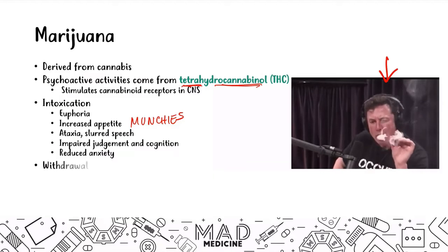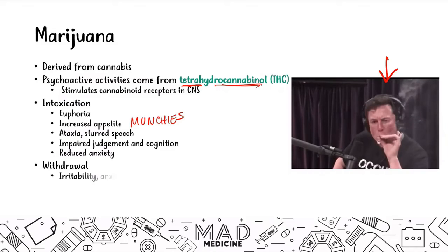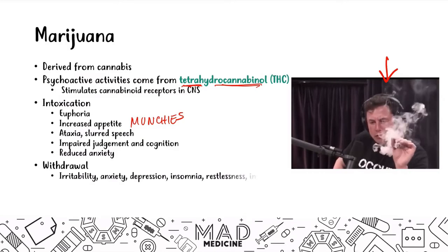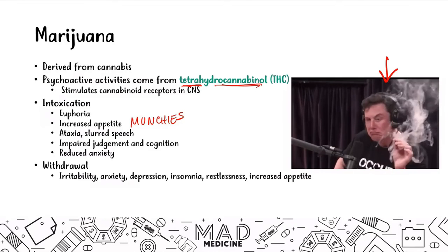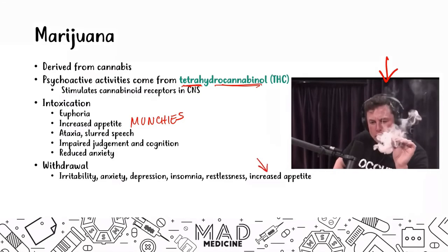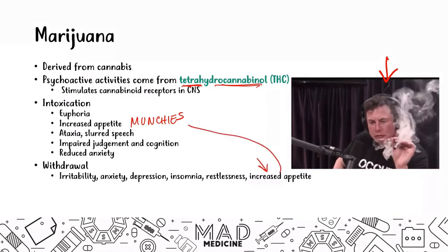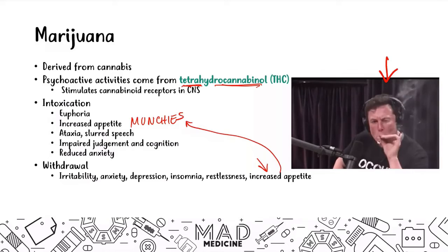Withdrawal symptoms are just the opposite of marijuana intoxication — patients will be irritable, anxious, depressed, insomniac, and restless. Interestingly, they will still have increased appetite, because the munchies effect persists even during withdrawal.